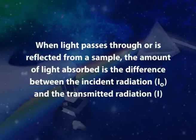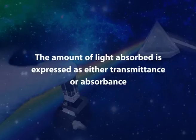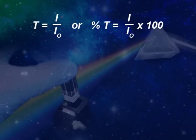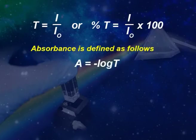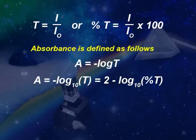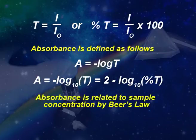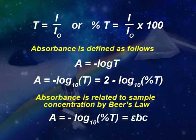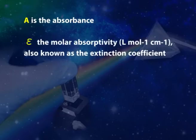When light passes through or is reflected from a sample, the amount of light absorbed is the difference between the incident radiation and the transmitted radiation. The amount of light absorbed is expressed as either transmittance or absorbance. Transmittance is given as a fraction of 1 or as a percentage: T equals I upon I₀, or percent T equals I upon I₀ into 100. Absorbance is defined as A equals minus log T, where A equals minus log₁₀ T equals 2 minus log₁₀ percent T. Absorbance is related to sample concentration by Beer's law: A equals εBC, where A is the absorbance, ε is the molar absorptivity in L per mole per centimeter, also known as the extinction coefficient.